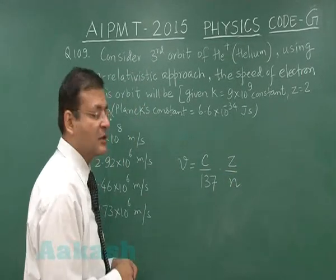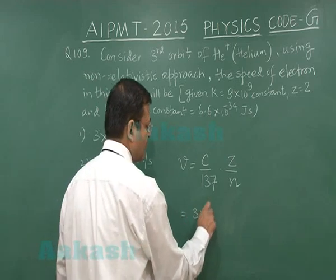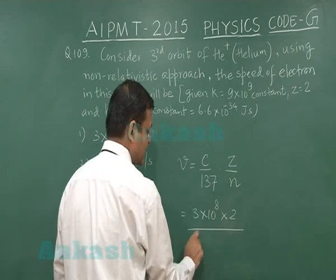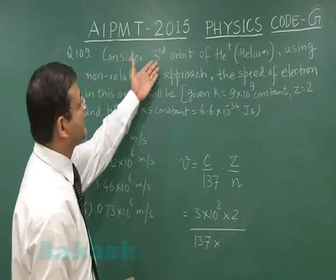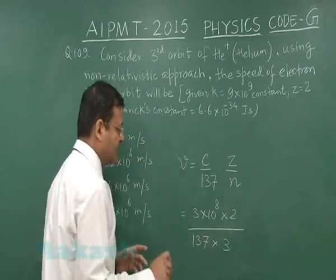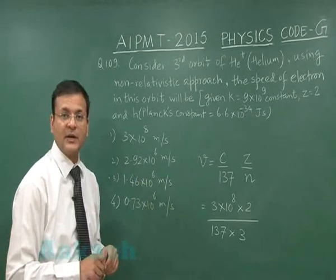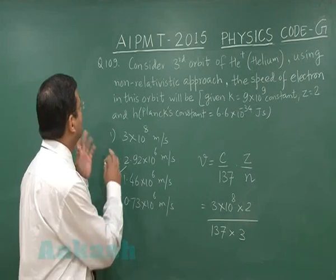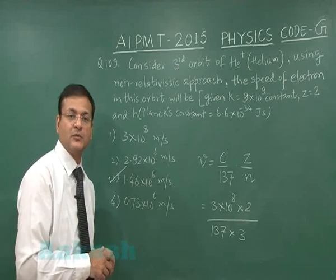You can directly use the formula for speed of electron in any orbit: c by 137 times z by n. This is the standard formula for speed of electron. Here c equals 3 times 10 to the power 8 meters per second, z value has been given to you equal to 2, and n is the orbit, the third orbit. If you solve this entire thing, you will get the expression like 1.46 times 10 to the power 6 meters per second. So I am marking option 3 for question number 109.